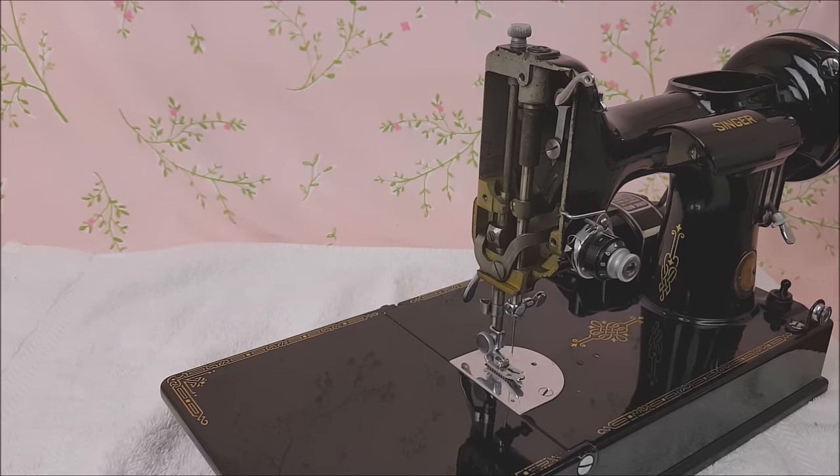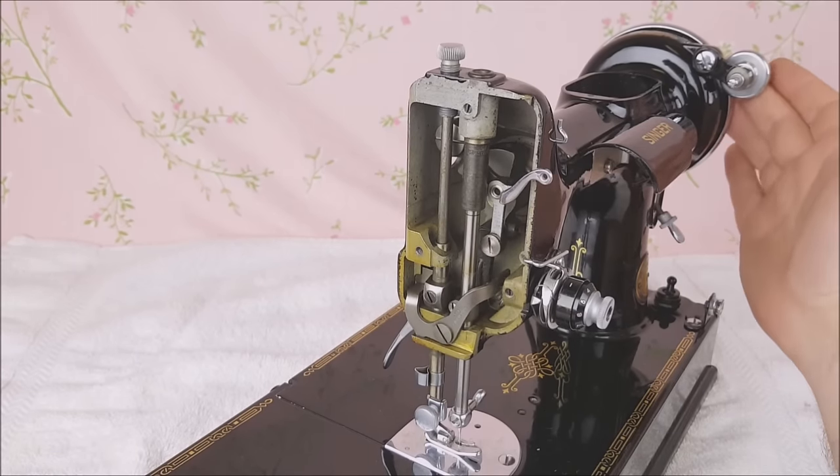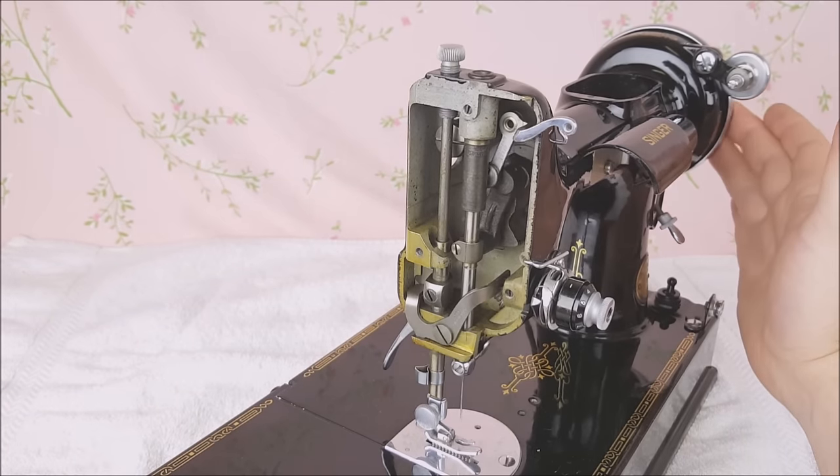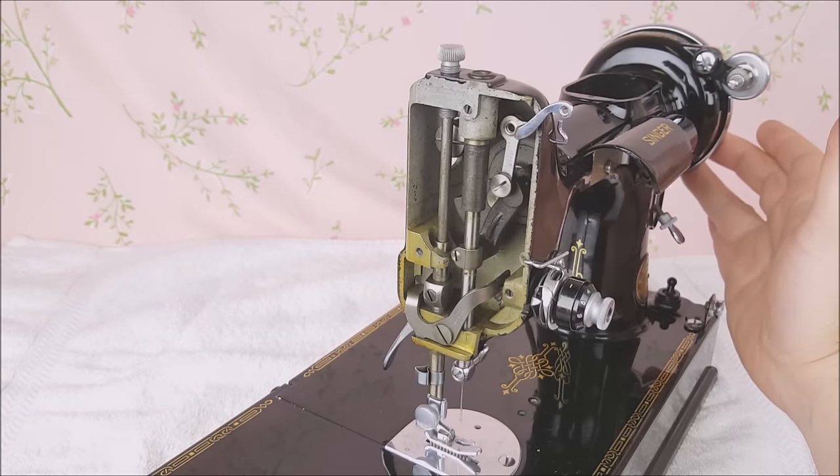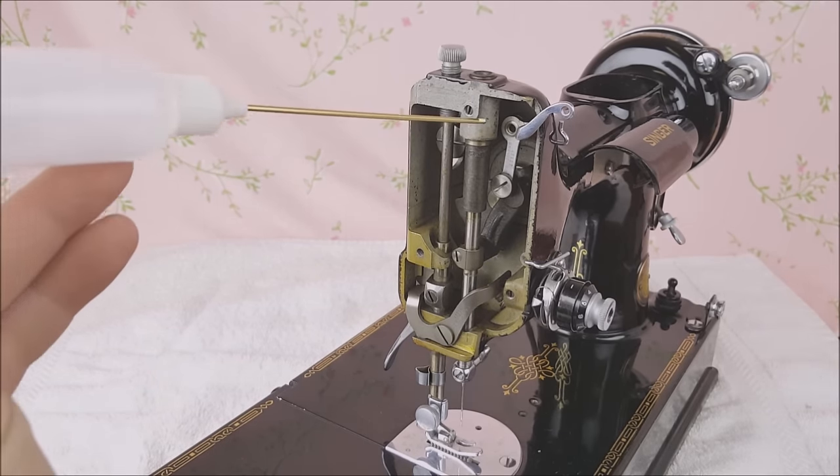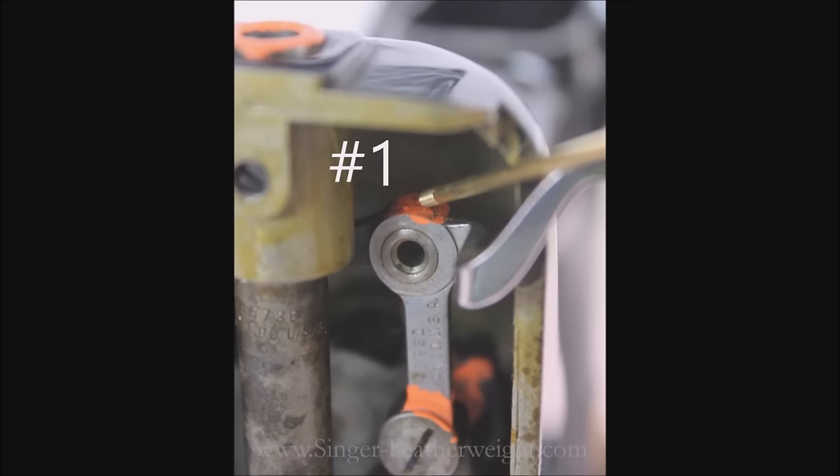Okay, now for oiling behind the faceplate, you're going to notice your diagram shows that most of these spots get a drop for every eight hours of use. You need to spin the hand wheel to get the take-up lever up to the top so that you can reach these points. In the beginning, on the front side, there's three spots that are pretty easy to get to up at the top.